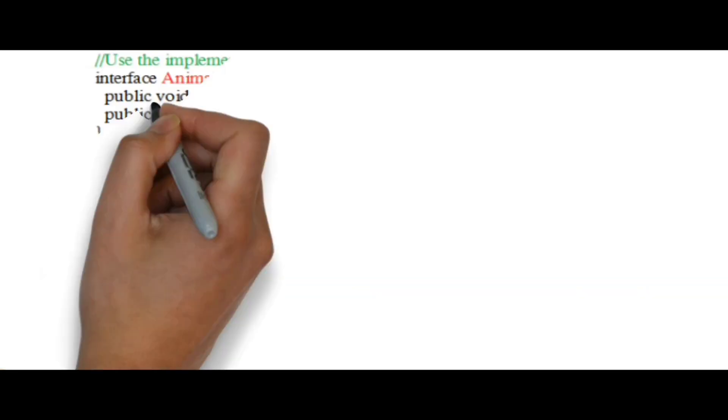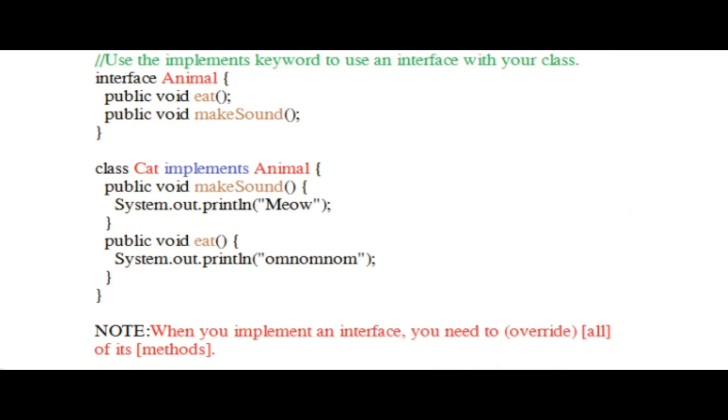Here in this example of interface animal, we have overridden all of its methods in our subclass using the implements keyword.